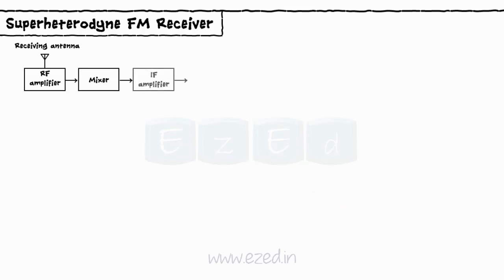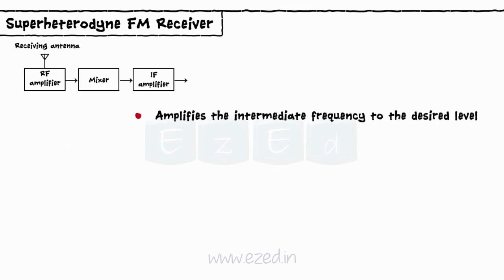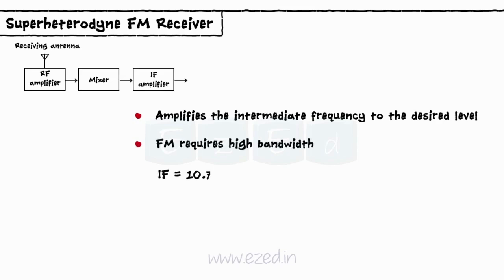IF amplifier: The IF amplifier performs the same operation of amplifying the intermediate frequency to the desired level. However, compared to AM, FM requires a higher bandwidth. Hence, the IF is nearly 10.7 MHz and the bandwidth is equal to 200 kHz.